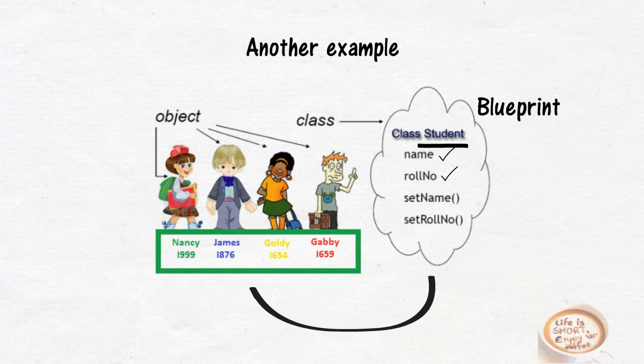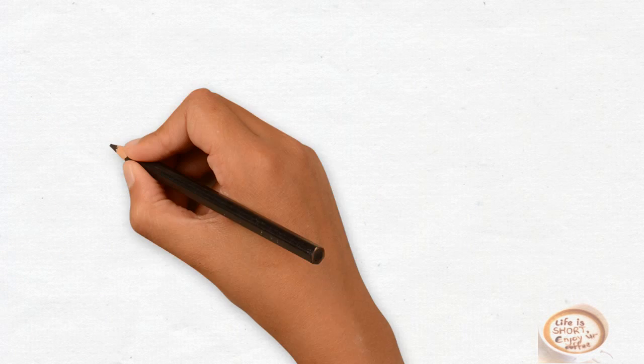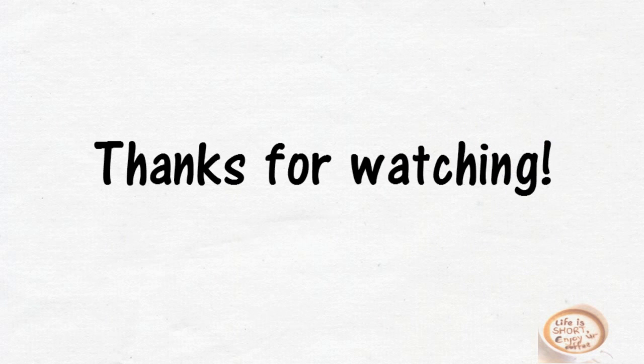Number one is having the value Nancy, two is James, three Goldie, and four is Gabby, along with their roll number. So we can create as many objects as we want. I hope my lesson helped you. Thanks for watching.